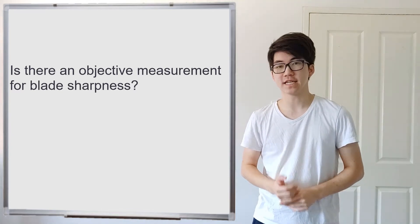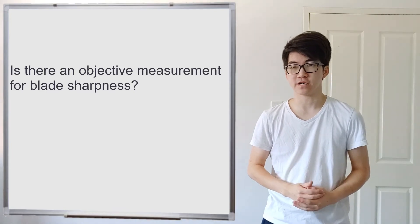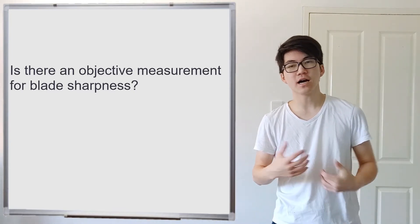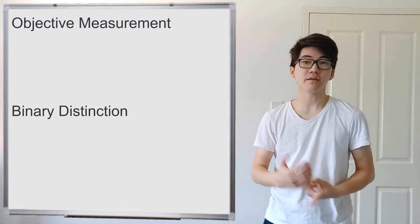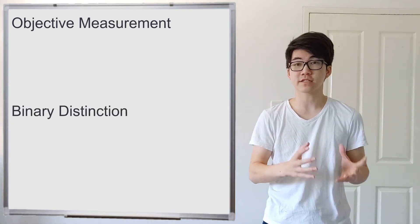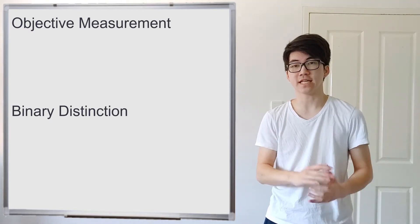Hey everyone, so the question for today is, is there an objective measurement for blade sharpness? I personally like either objective measurements or binary distinctions. An objective measurement is something where there is a number associated with it and that number doesn't change. It has a value and that is it.